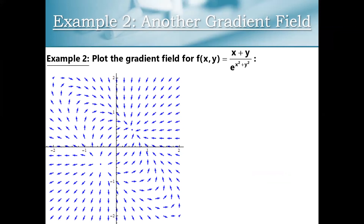Here's another example. We have f of x, y equals x plus y over e to the x squared plus y squared. You guys have done enough analysis that you already kind of know this function is going to have one global maximum and one global minimum. Compare the numerator and denominator — the denominator dominates that equation and the numerator can be both positive and negative. Now let's plot the gradient field for that surface.